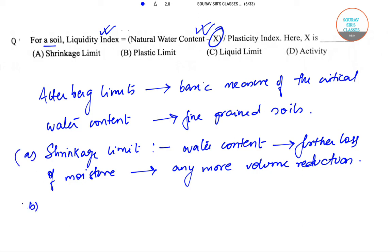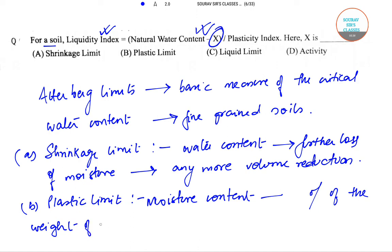And lastly, so this is A, and then B is the plastic limit. Now the plastic limit of the soil is the moisture content expressed as a percentage of the weight of the oven-dried soil, at the boundary between plastic and semi-solid status of consistency.